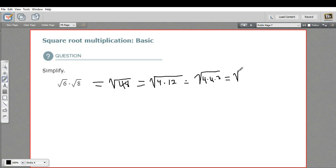I'm going to rewrite this: 4 times 4 is 16 times 3. So it's in a factored form that makes it obvious that we have a perfect square here.